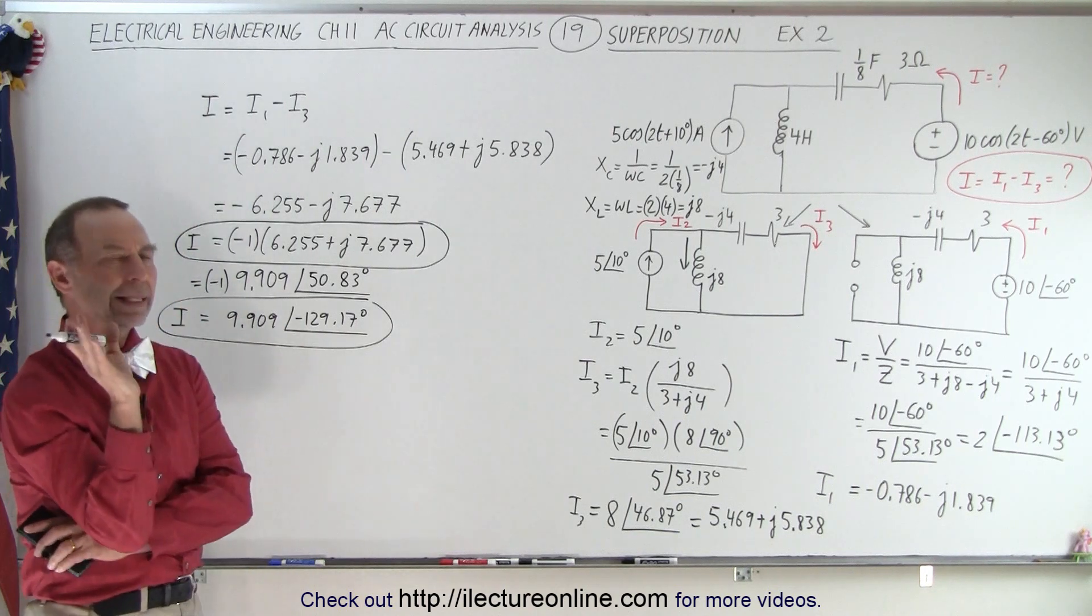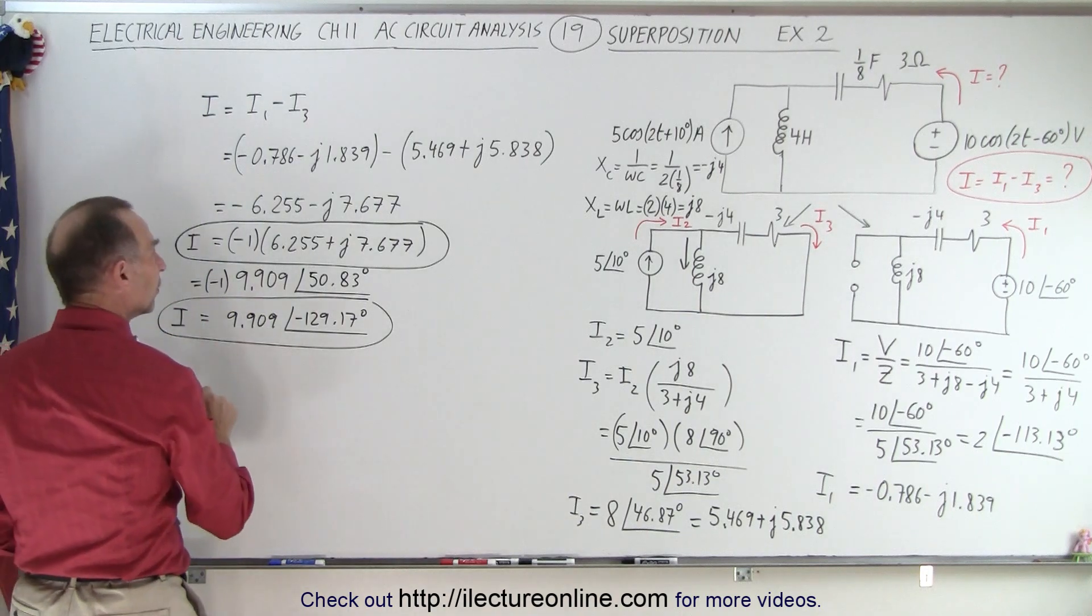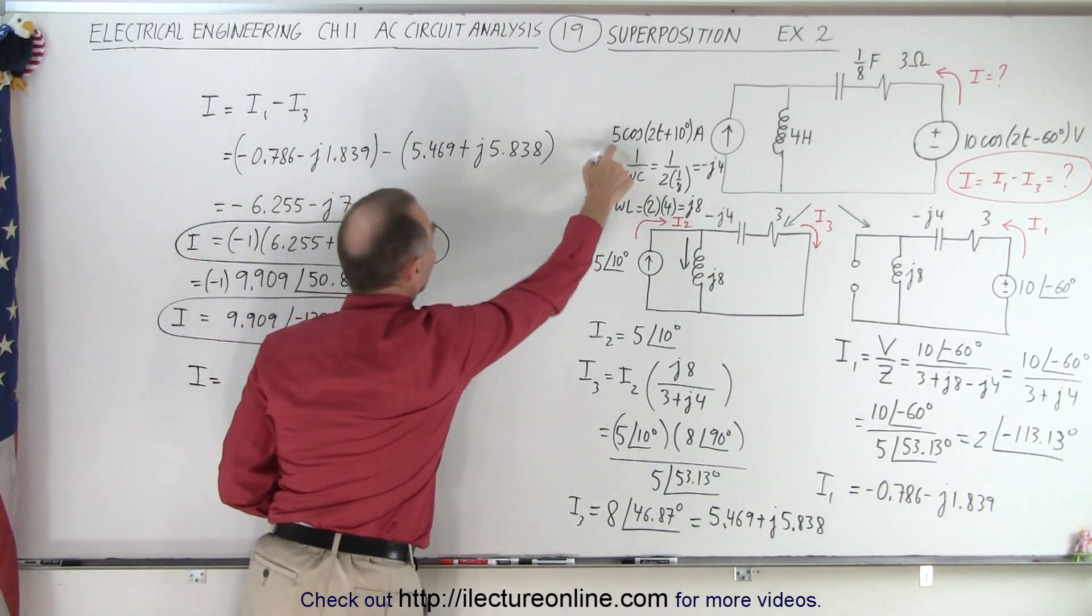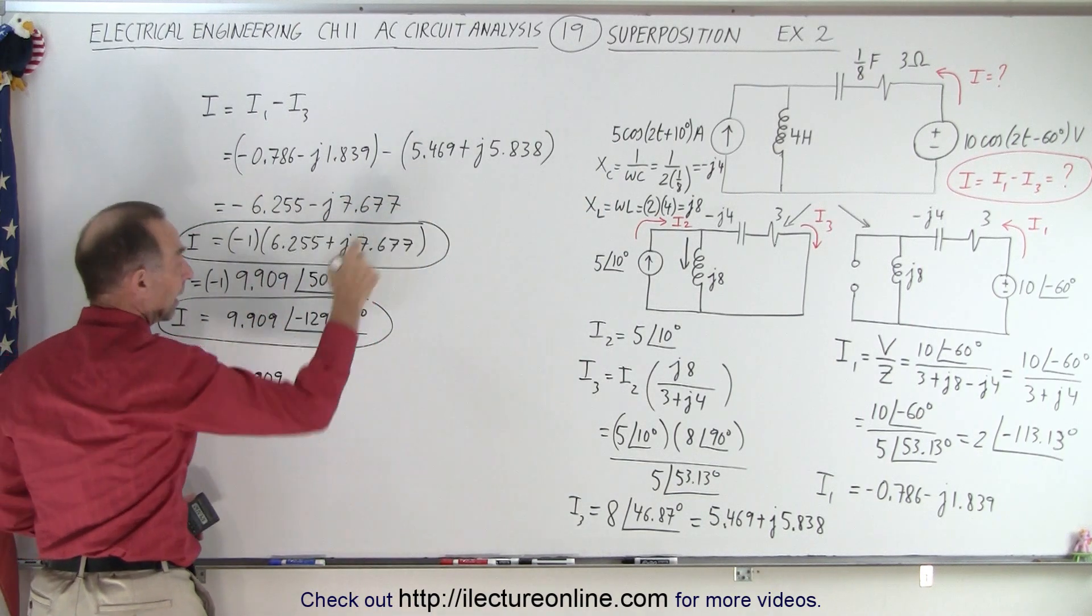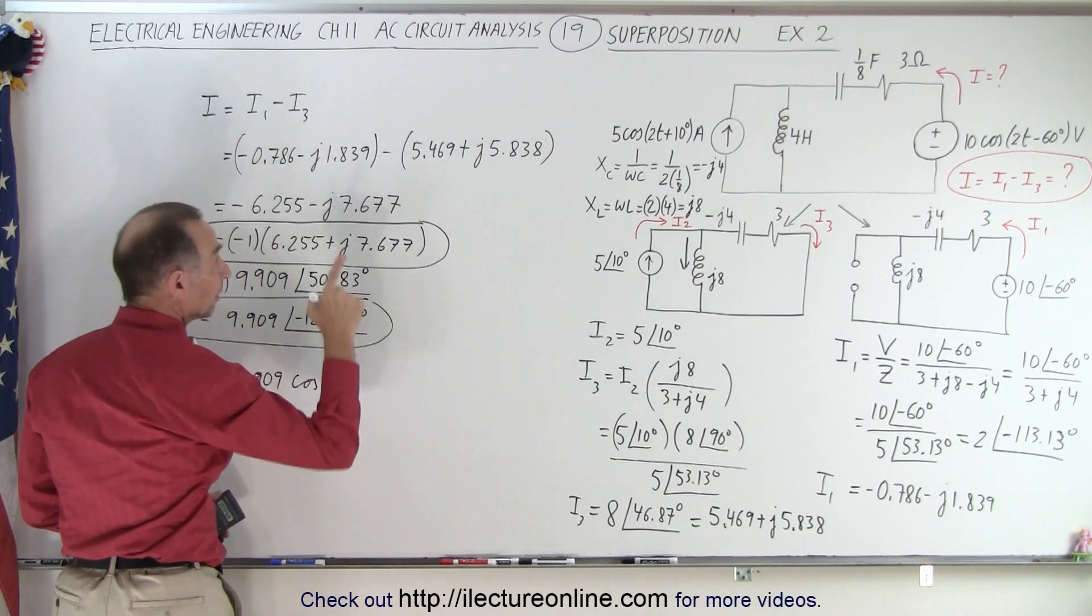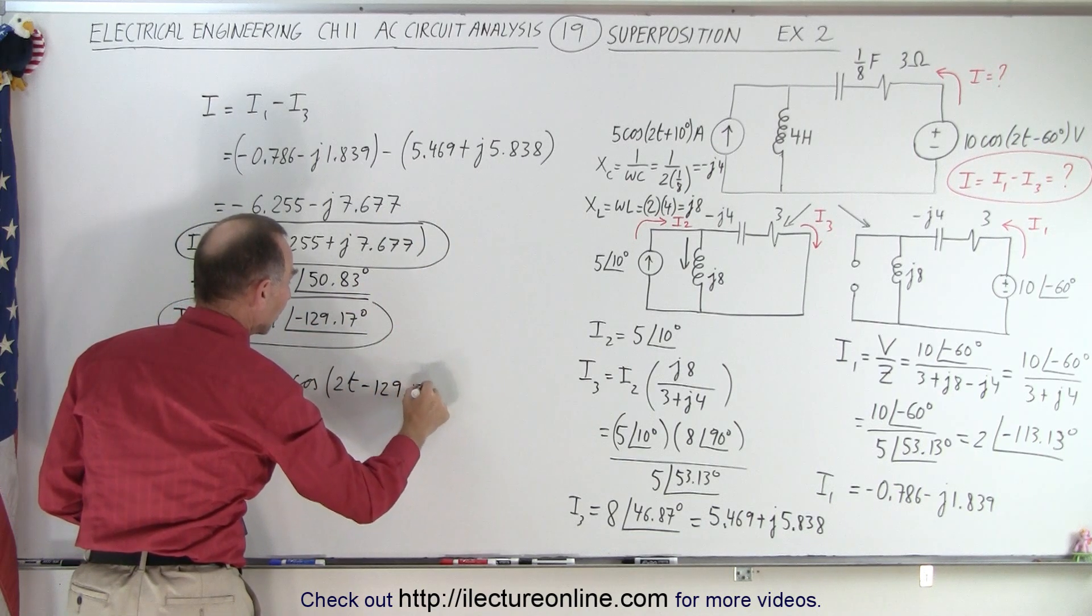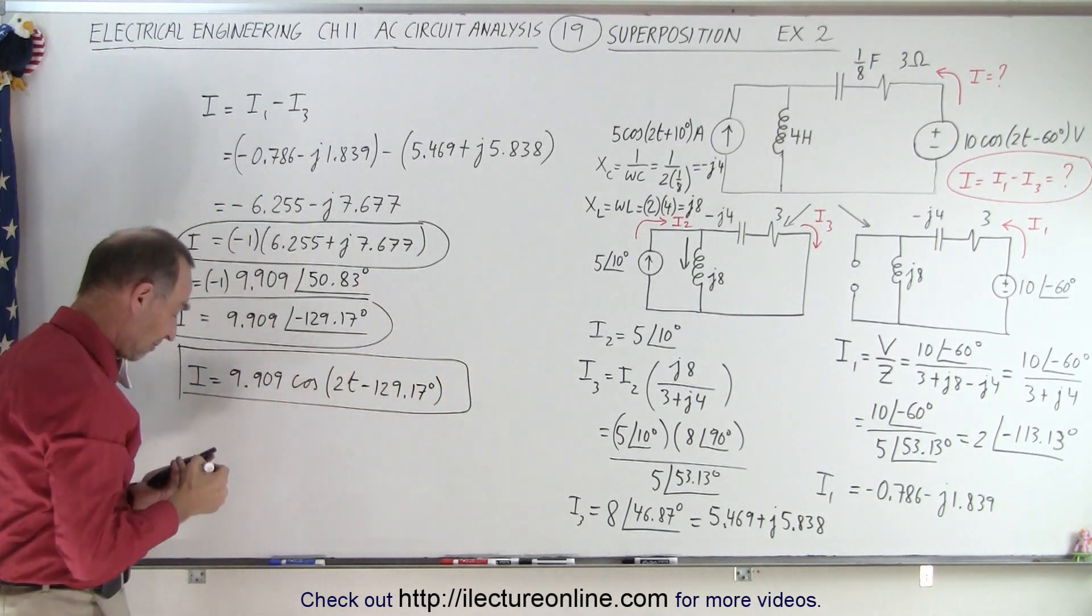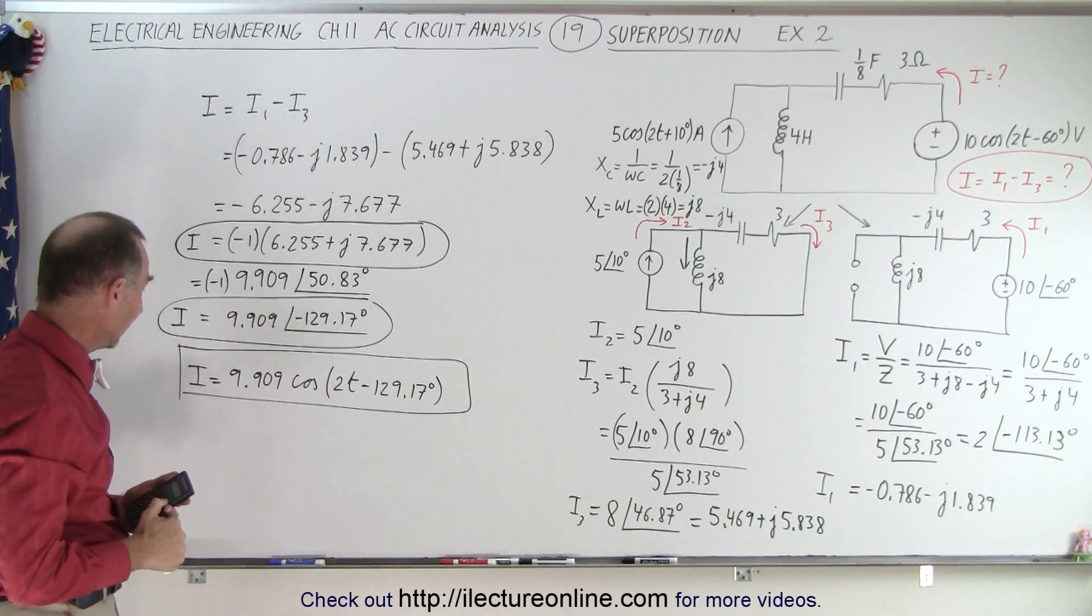What if we want to write the answer in the time domain format? We can do that too. So we can say that I equals the magnitude, 9.909 times the cosine of omega t, which is 2t, and the phase angle would be minus 129.17°. So we could also write the current in the time domain format since they gave us the original circuit in the time domain.